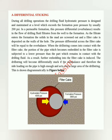When the drill string comes into contact with the filter cake, the portion of the pipe which becomes embedded in the filter cake is subjected to a lower pressure than the part which remains in contact with the drilling fluid. As a result, further embedding into the filter cake is induced. The drill string will become differentially stuck if the overbalance and therefore the side loading on the pipe is high enough and acts over a large area of the drill string. This is shown diagrammatically in the figure below.